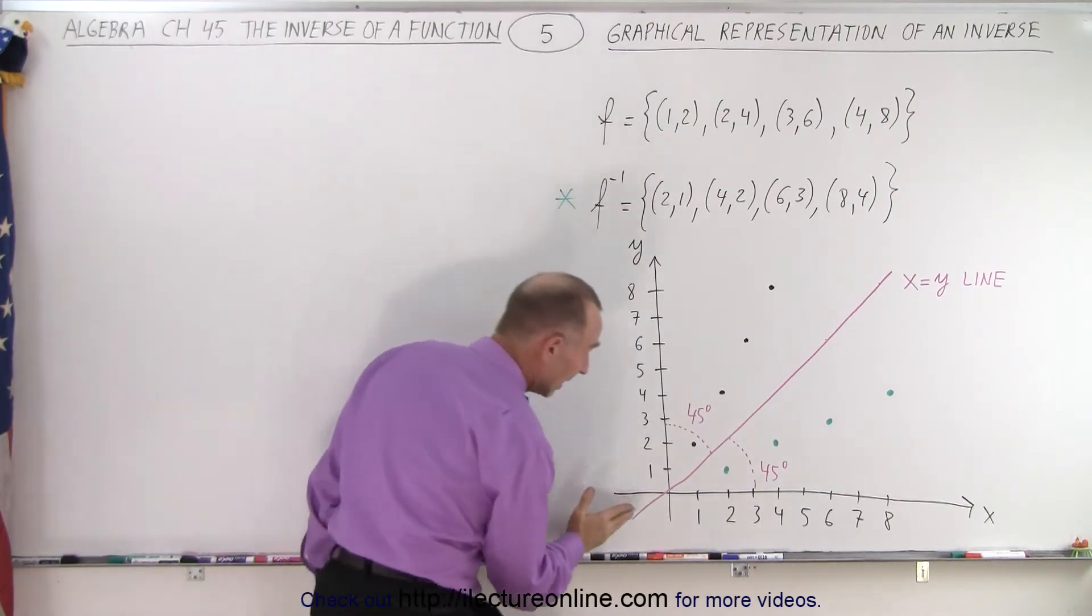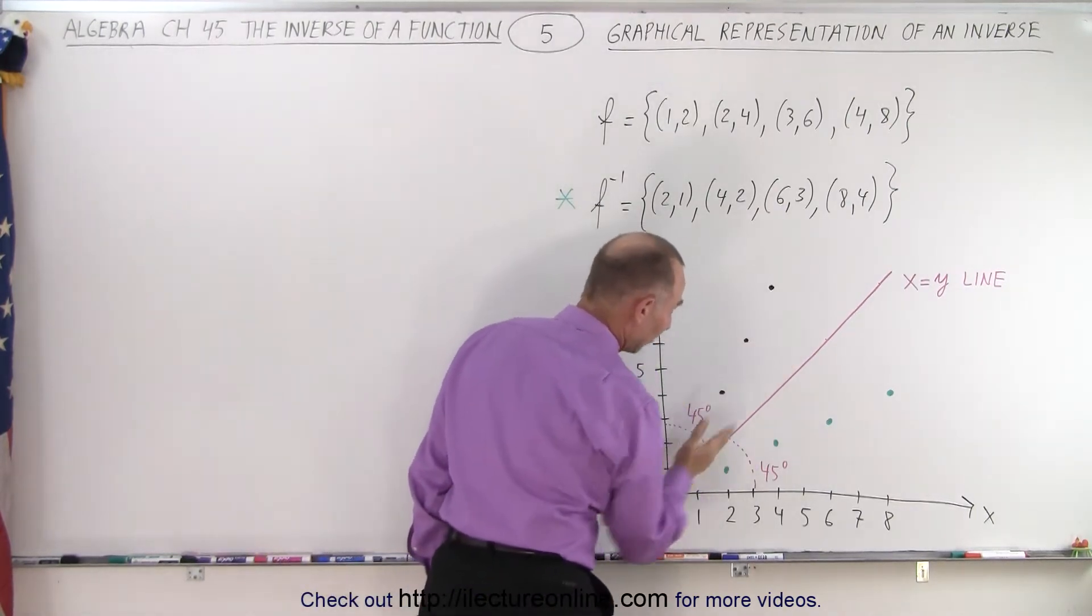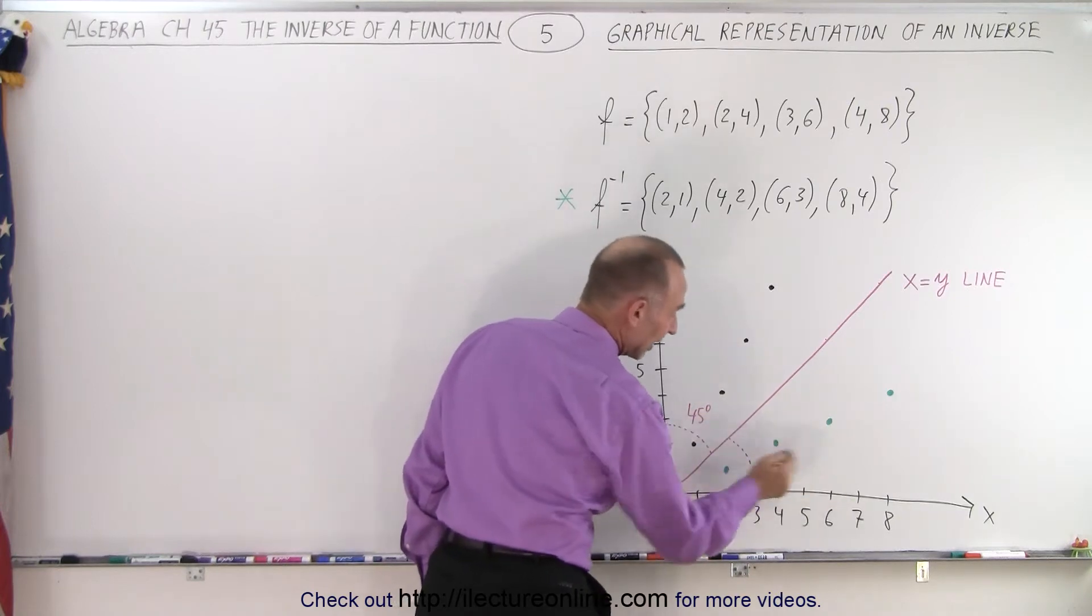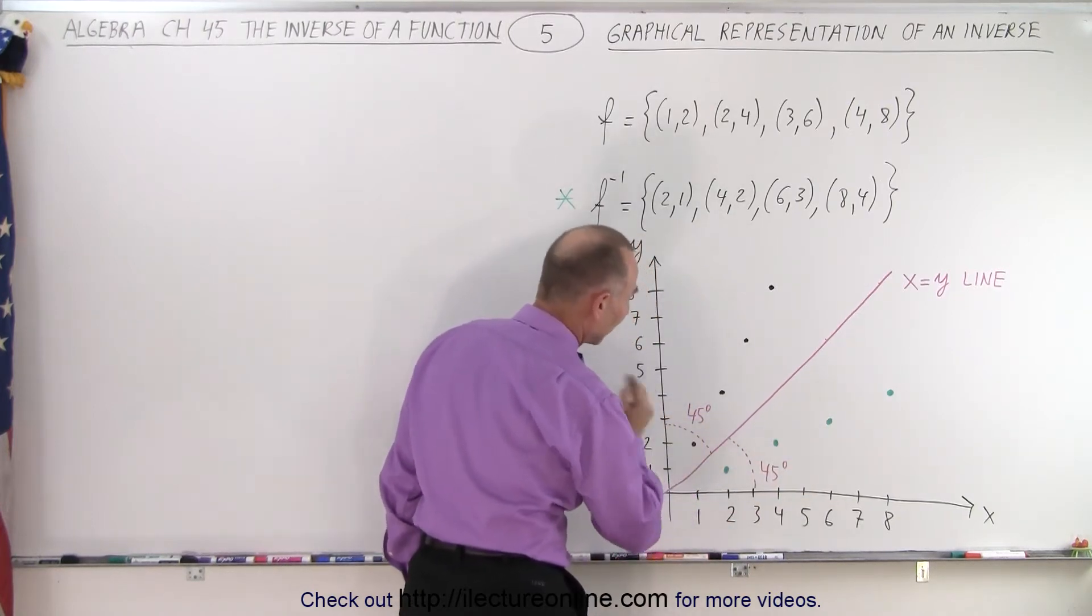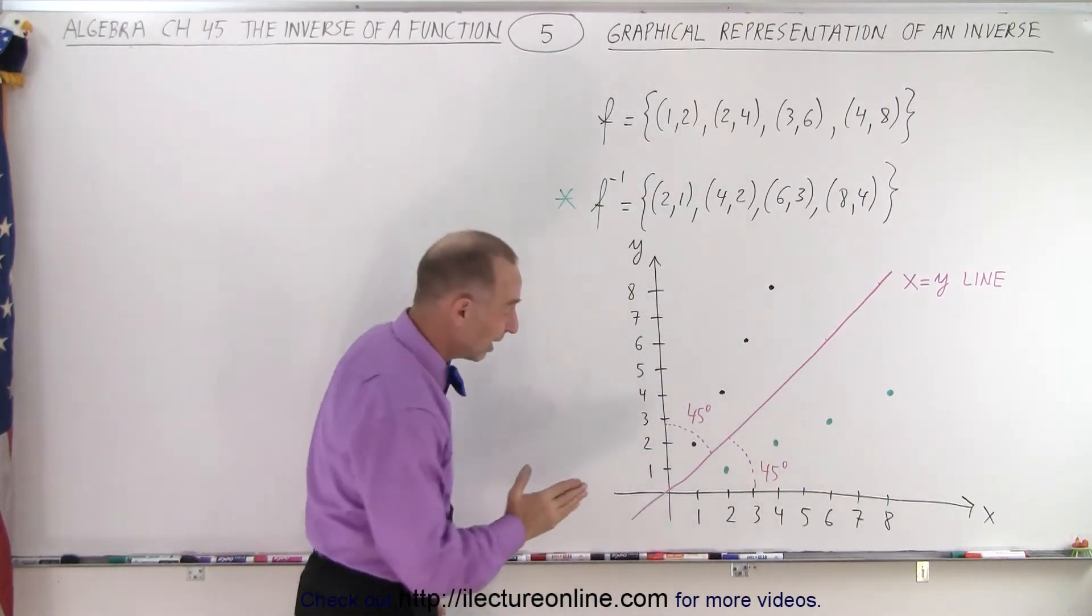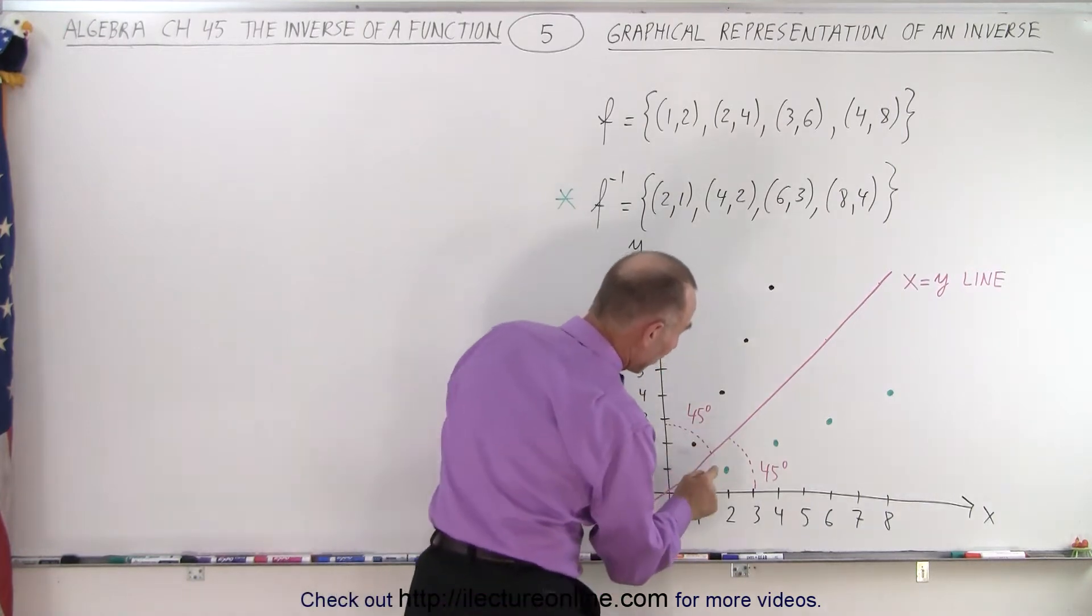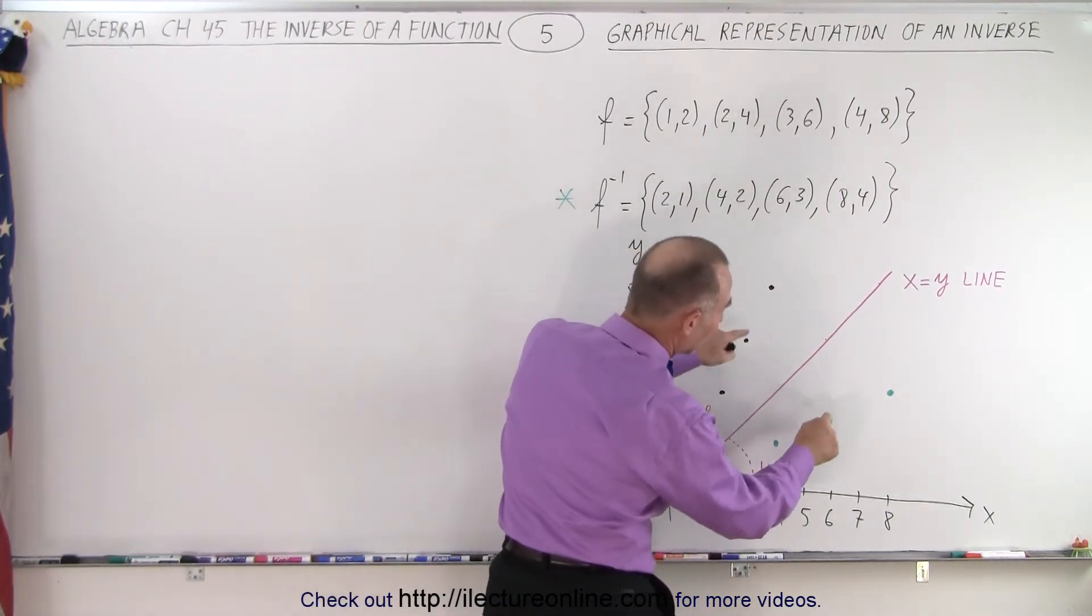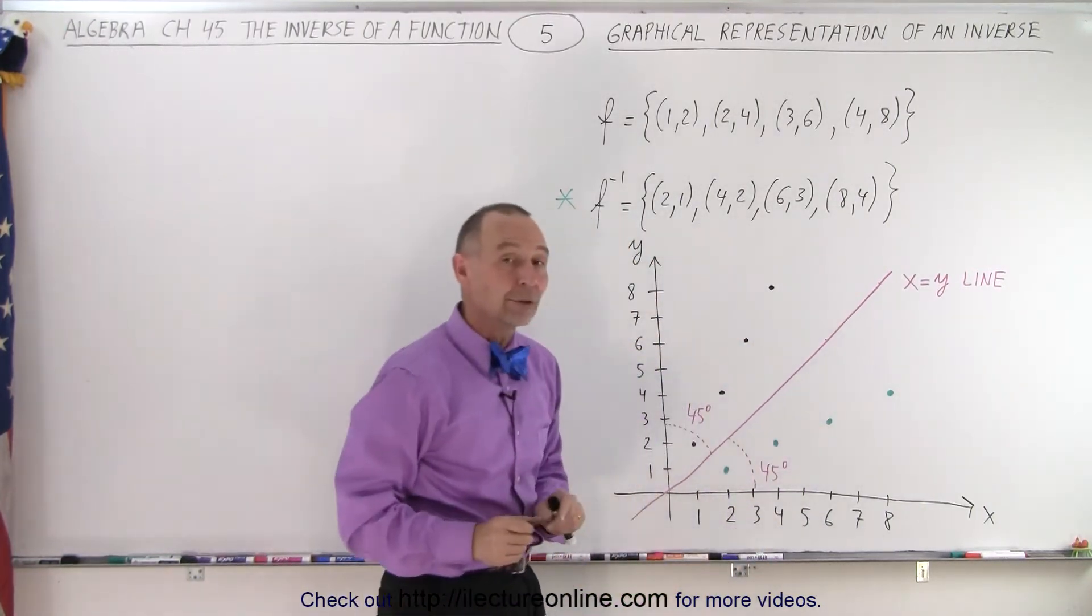Now we've also drawn the line x equals y, which is a line that's 45 degrees away from the x-axis and 45 degrees away from the y-axis. And notice that if you draw this line, you have these dots, and they're mirror images of one another.